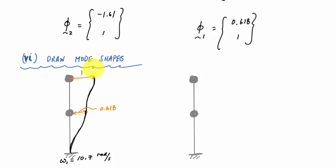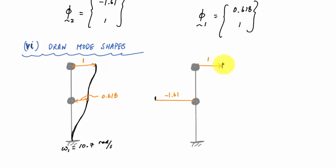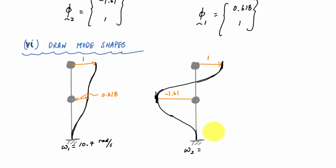For my second mode, I would have here a unit displacement, and over here on the opposite side this would be negative 1.61. When I draw this, it's going to look pretty crazy, but here are my mode shapes and natural frequencies for this two degree of freedom system.